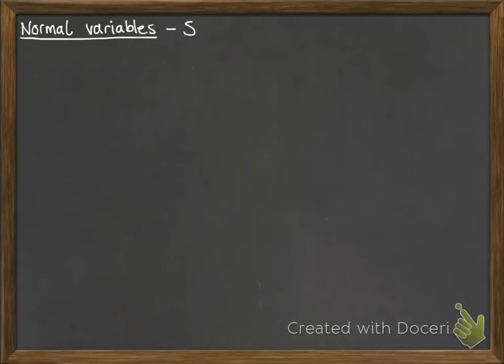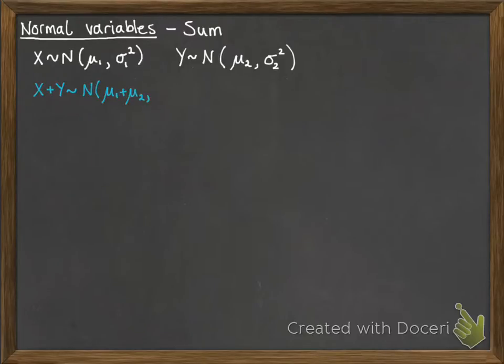Normal variables today. We're looking at the sum first of all. If we've got these two distributions, X and Y are both normally distributed with means of μ₁ and μ₂ and variance of σ₁² and σ₂². Just stating them in general terms. If we wanted to do the sum of those distributions, then we would add the means and add the variances.